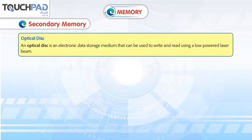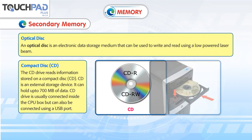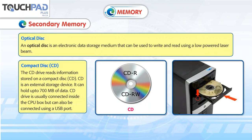An optical disk is an electronic data storage medium that can be written to and read using a low-powered laser beam. A CD drive reads information stored on a compact disk. CD is an external storage device that can hold up to 700 MB of data. The CD drive is usually connected inside the CPU box but can also be connected using a USB port.